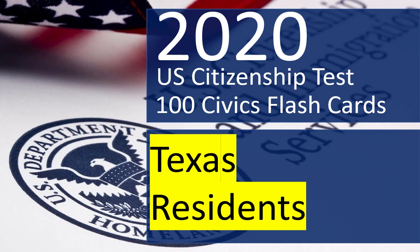The current exam, which has been in place since 2008, asks applicants 10 randomly generated questions from the list of 100 you are about to study in this video. The questions focus on three subjects: American government, American history, and integrated civics. Applicants must get at least 6 out of the 10 questions correct to pass the civics test. Let's get started.